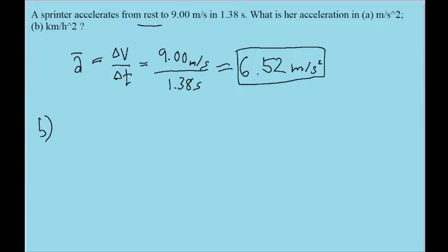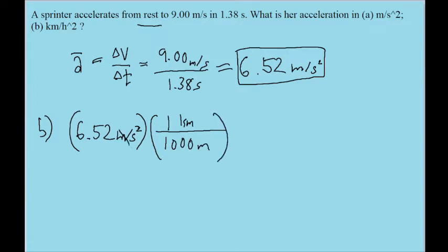We can find this new answer by taking the acceleration we just found for part A and performing a unit conversion on it to convert from meters to kilometers and seconds to hours. First off, we'll convert from meters to kilometers. So there are 1,000 meters in 1 kilometer. In this chain link conversion, we'll first multiply by 1 kilometer over 1,000 meters. This will convert the meters into kilometers.